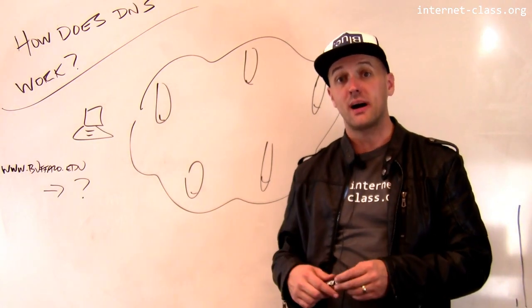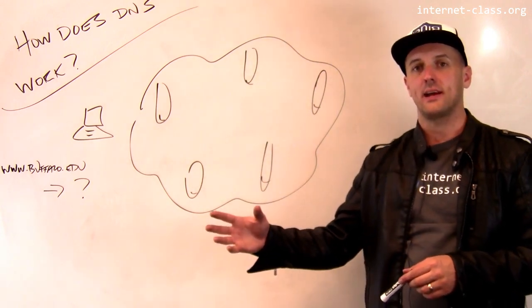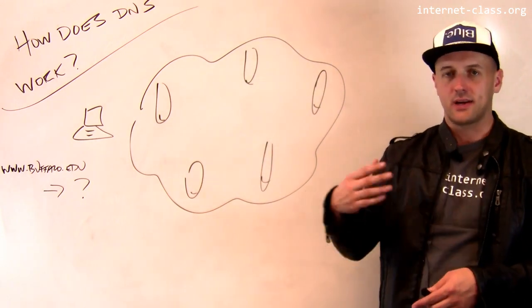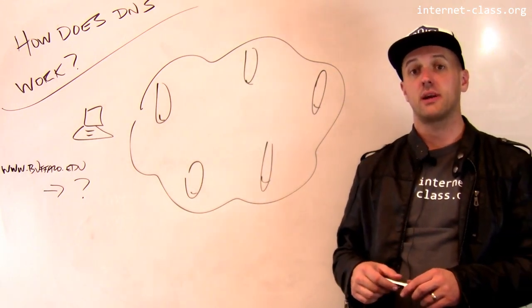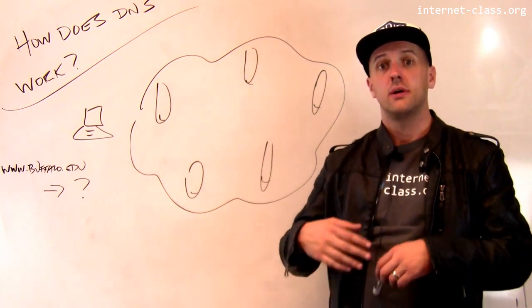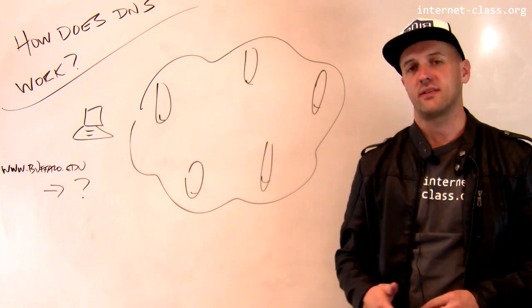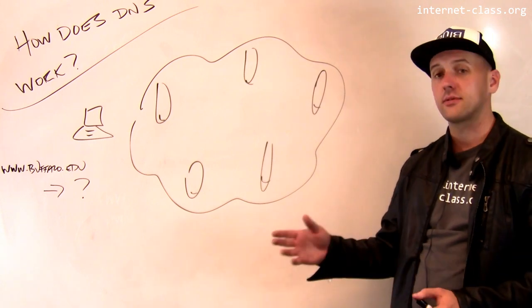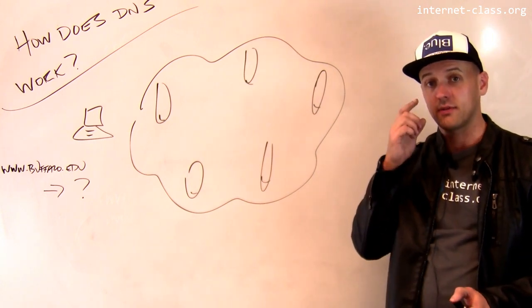The domain name system is responsible for translating these human readable names like www.buffalo.edu into machine readable names, IP addresses, either IPv4 or IPv6. And so that's the responsibility of the domain name service.